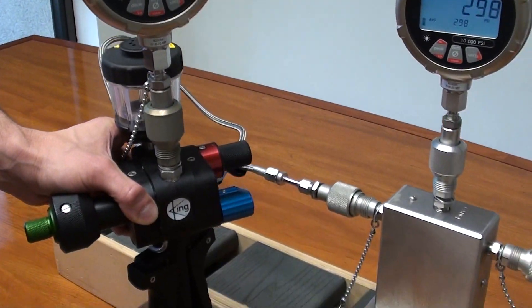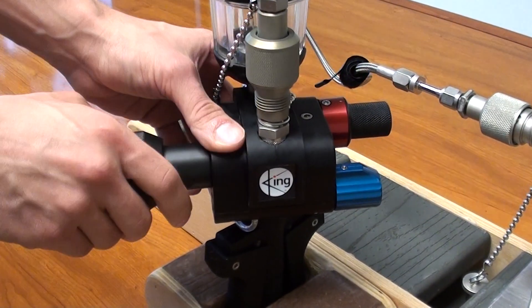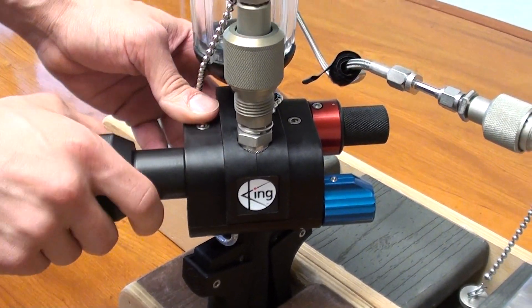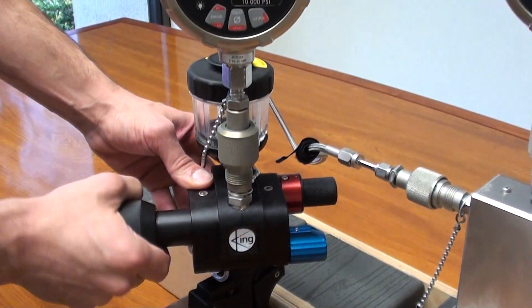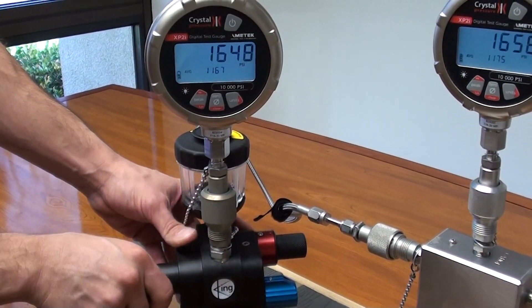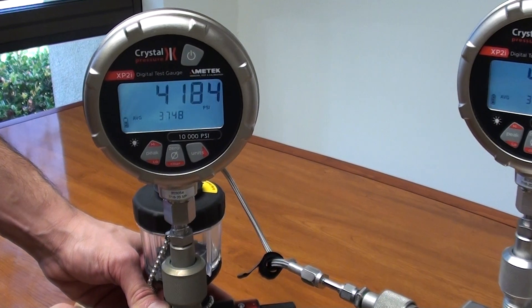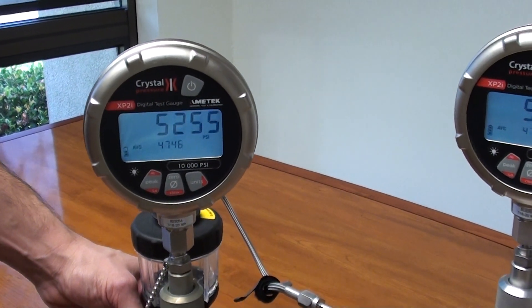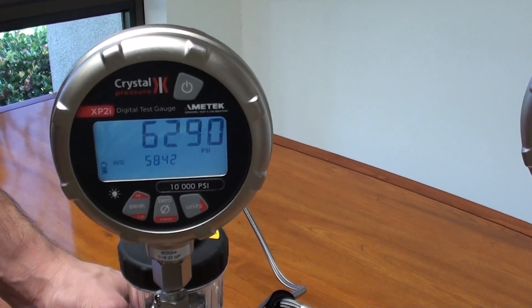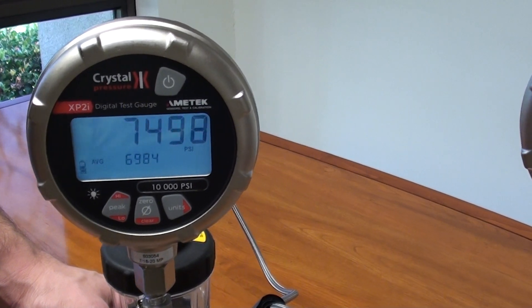After that we're going to use the volume adjuster knob to generate high pressure on our hand pump. So as you can see by rotating the knob we're increasing the pressure and we're going to take this all the way to between 9500 and 9800 PSI.